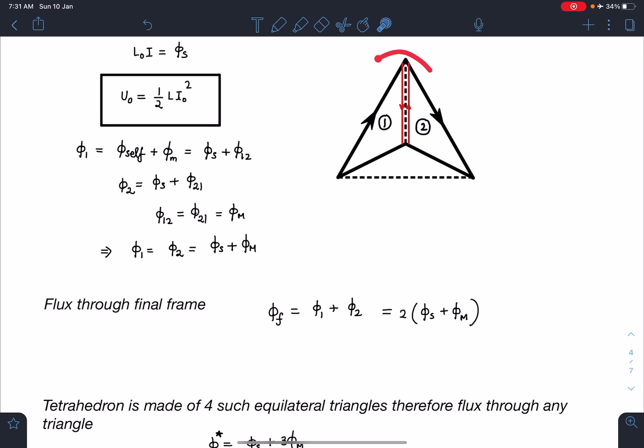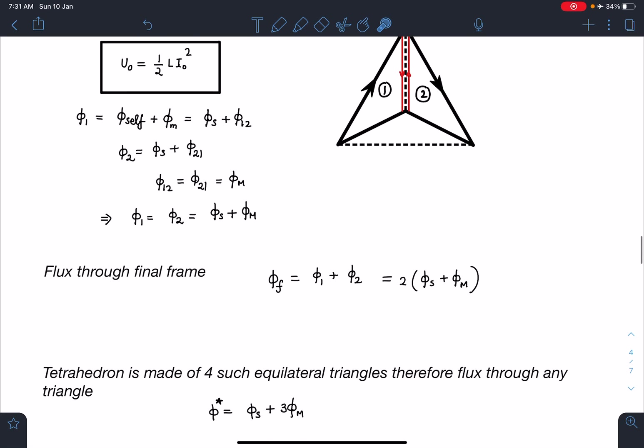You can say here through any triangle, its own flux will pass and due to three other surfaces there is going to be mutual flux. For the complete tetrahedron when it is closed surface all four triangles are present, all are current carrying. In this situation I can say the flux passing through any one face that is going to be its own flux which is the earlier self flux. And then three other surfaces, three other triangles are going to contribute 3φ_m.